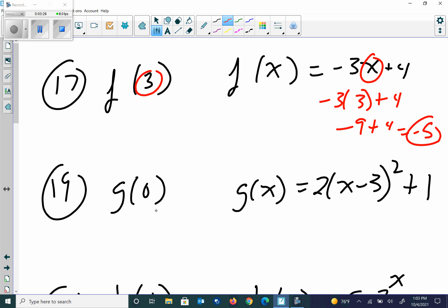Number 19, we're going to use the g equation, because we had g at 0. So again, I'm going to take the 0. I'm going to plug it in here. So I get 2, 0 minus 3 quantity squared plus 1. So 2 times negative 3 quantity squared. So that's 2 times 9. Negative times negative is positive. So 2 times 9 is 18 plus 1. That gives me an answer of 19.